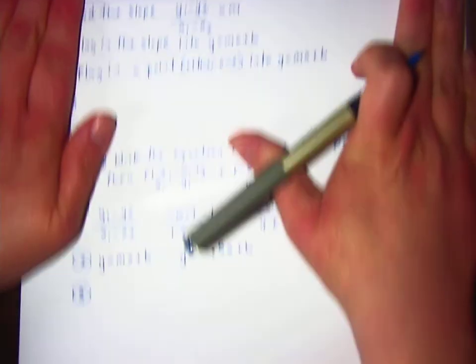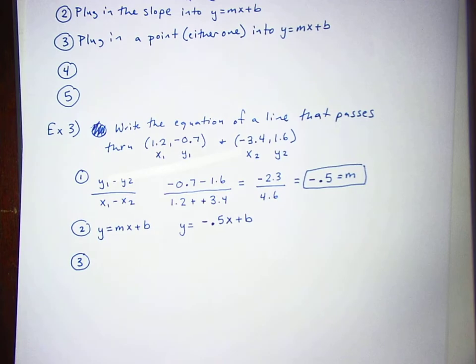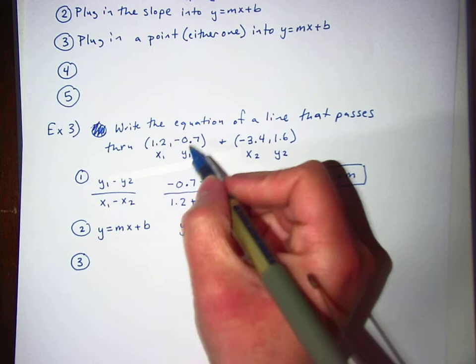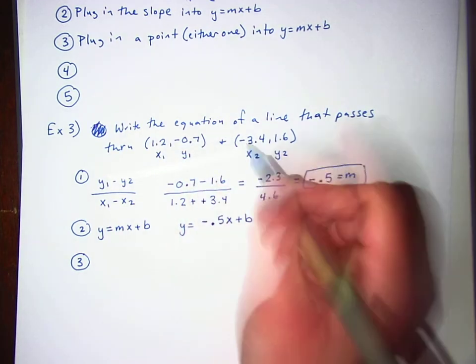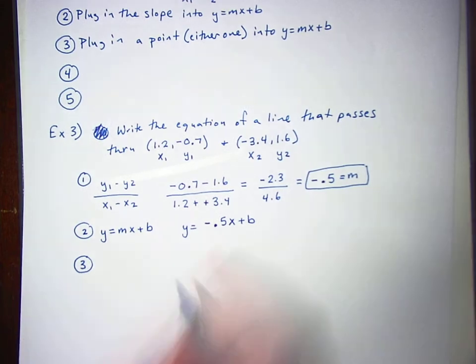So mathematicians are lazy. That means they do the easiest thing possible to get the job done. A good mathematician would pick which point they think looks easier to work with. I guess I would say that's maybe the first point for me, but it doesn't matter. Either point that you use will work in this equation and give you the same answer.